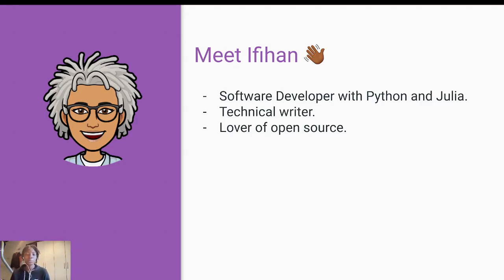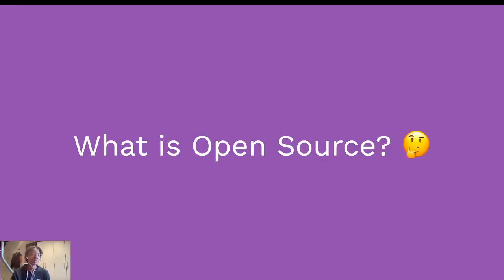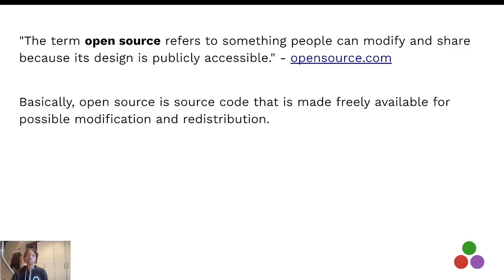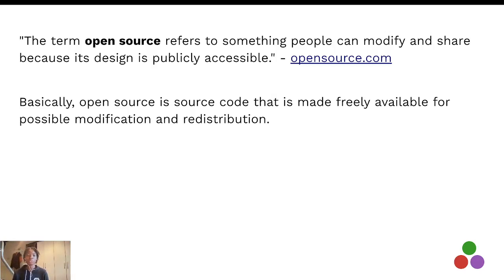First, we need to learn what open source is all about. According to opensource.com, it refers to something people can modify and share because its design is publicly accessible. In simple terms, open source is source code that is made freely available for possible modification and distribution.